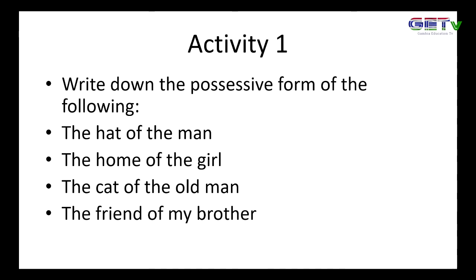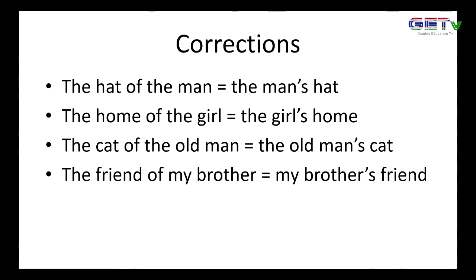The first activity: write down the possessive form of the following. One: the heart of the man. Two: the home of the girl. Three: the cat of the old man. Four: the friend of my brother. The heart of the man becomes the man's heart. The home of the girl becomes the girl's home, because girl is one person — we write apostrophe and then S. The cat of the old man becomes the old man's cat. The friend of my brother becomes my brother's friend. These are all singulars — no S plural — so we just put apostrophe and then S.